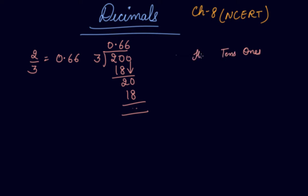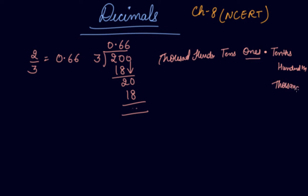Now, when a number starts from ones, it has tens as a place value, then hundreds, then thousands, and so on. But what if the number is not in ones? Scientists invented that we put a decimal point, and the number coming after the decimal will be the tenths place, then hundredths place, then thousandths place. So these are your decimals.